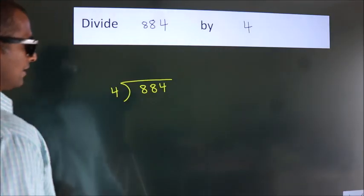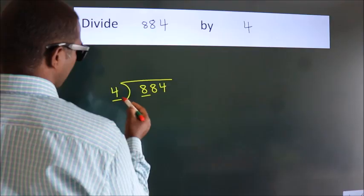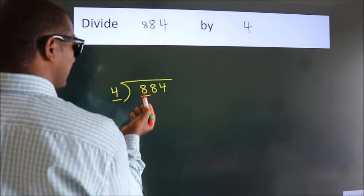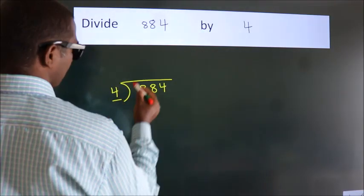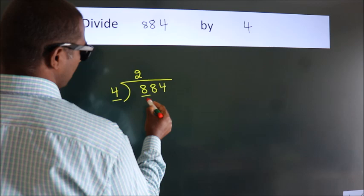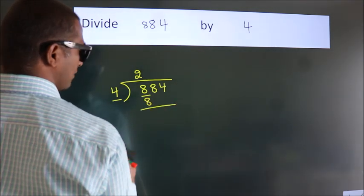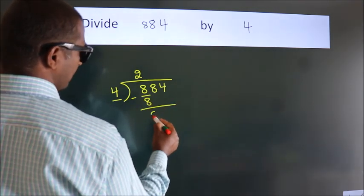Next, here we have 8, here 4. When do we get 8 in the 4 table? 4 twos, 8. Now, we subtract. We get 0.